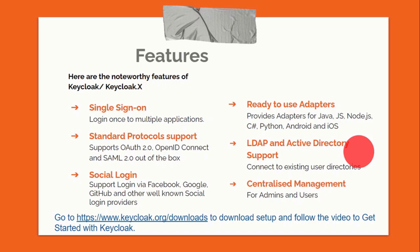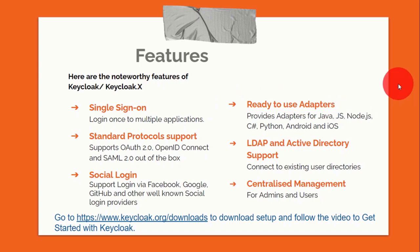Why is Keycloak being used? The first feature is single sign-on. Keycloak supports standard protocols like OAuth 2.0, OpenID Connect, and SAML 2.0 out of the box. Social login is also supported — Keycloak supports multiple social login providers like Facebook, Google, and GitHub. Next are ready-to-use adapters: Keycloak comes with provider adapters for Java, JavaScript, Node.js, C#, Python, Android, and iOS.